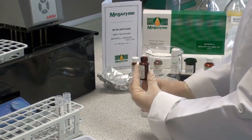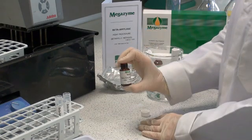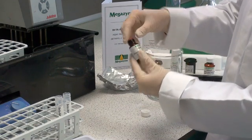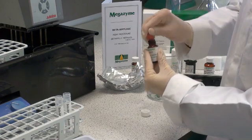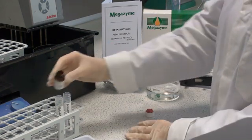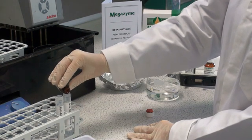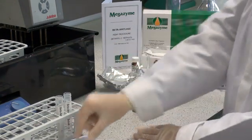Cap the vial and mix well to ensure that all of the substrate is dissolved. Just check visually to ensure that this is the case. Then transfer the solution into two polypropylene containers, and these will be stored at minus 20 degrees centigrade between use and on ice during use. This ensures maximum stability of the reagent.